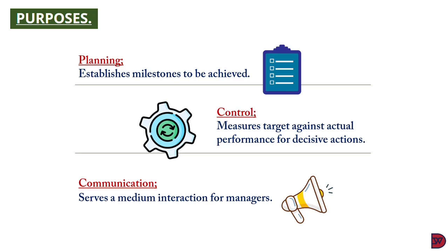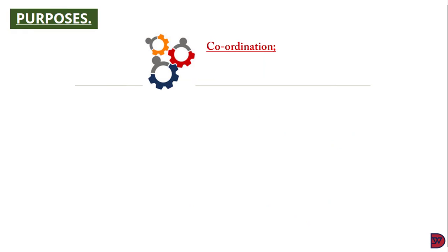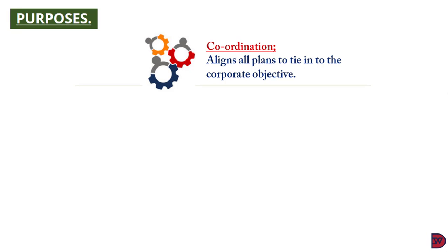The third purpose is communication. The budget stands as a formal medium of interaction within the business. Managers of departments are assigned their targets for the year. For example, the budget of the sales department communicates the quantity to be manufactured to the production department. The overall corporate goal — both short and long term — is also spelled out to all who matter in the business.